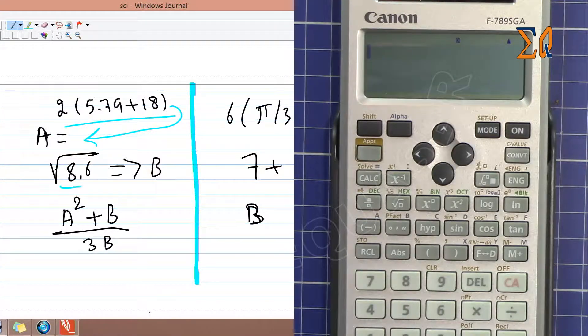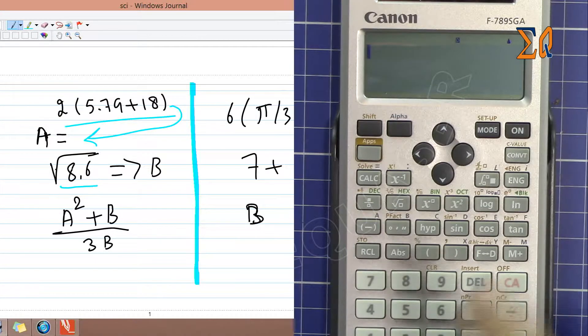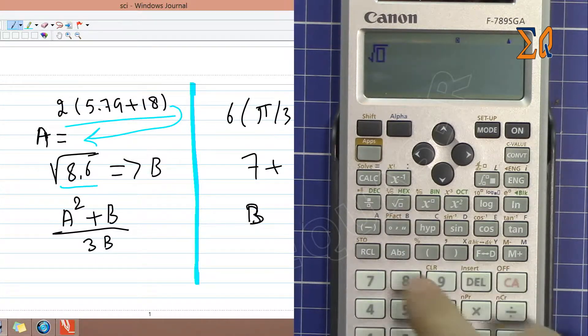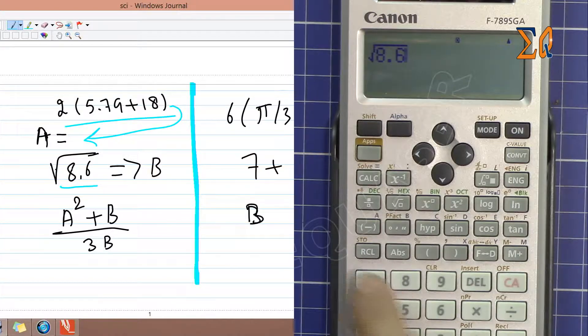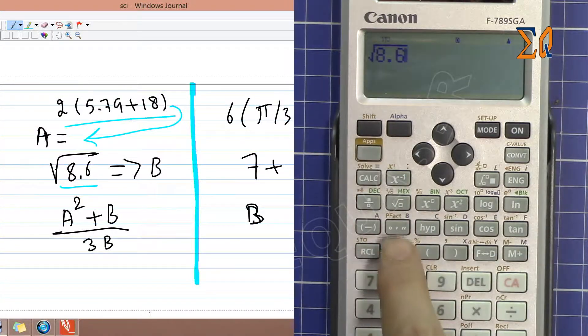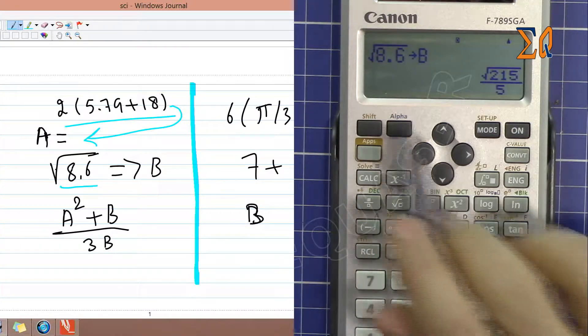Now let's do this calculation: square root of 8.6 into memory B. We want to do it and put it in B. Square root of 8.6, and then Shift Store. Now I'm pressing B, so this goes into B.